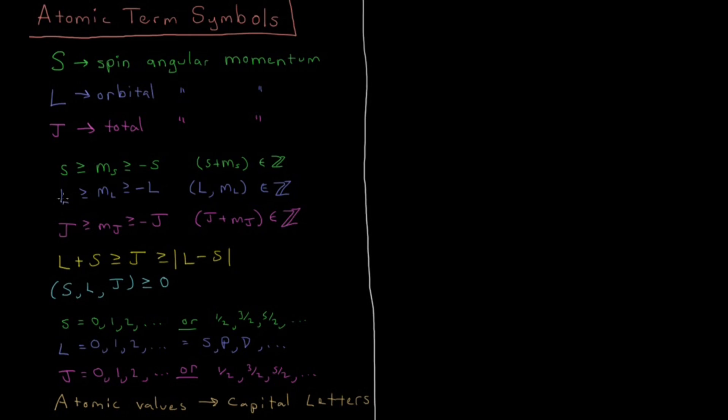So if l is 2, we would have 5 values of m sub l: 2, 1, 0, minus 1, and minus 2. That works very similar to how the quantity little l would work for a single orbital or a single electron.